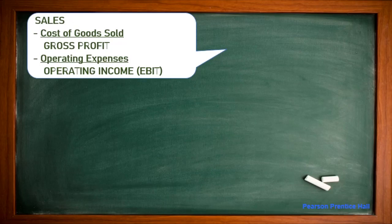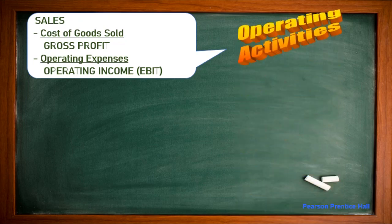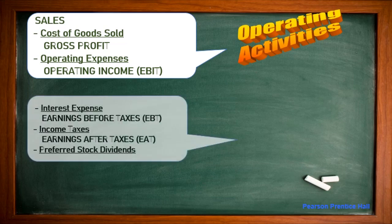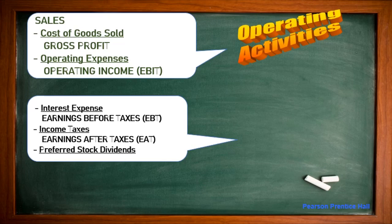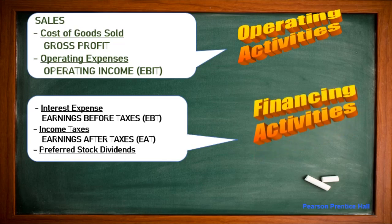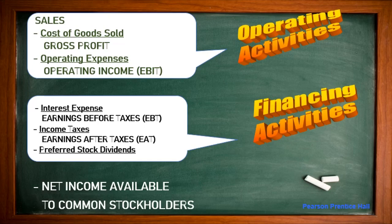The first portion — sales minus cost of goods sold, gross profit minus operating expenses — gives operating income or EBIT. This is the operating activity area. The second portion — interest expenses, earnings before taxes, income tax, earnings after tax, and preferred stock dividend — comes under financing activities. After all reductions, we get net income available to common stockholders.